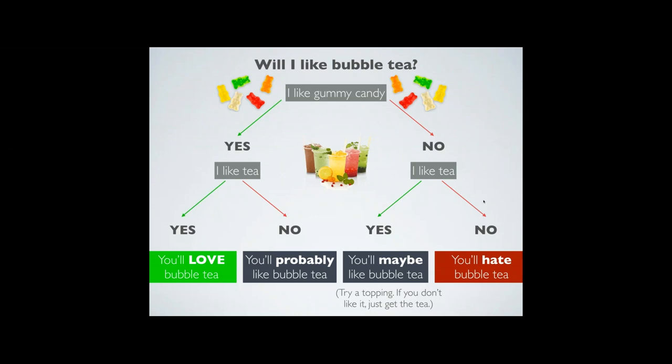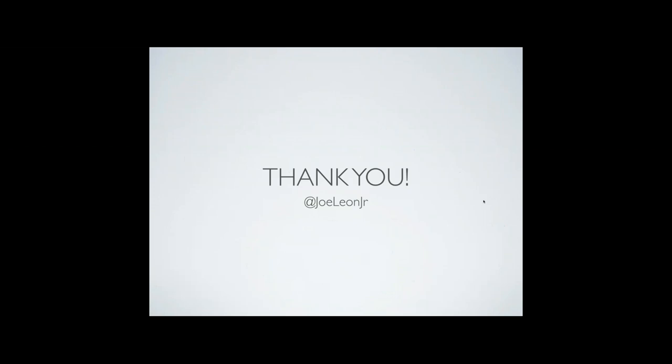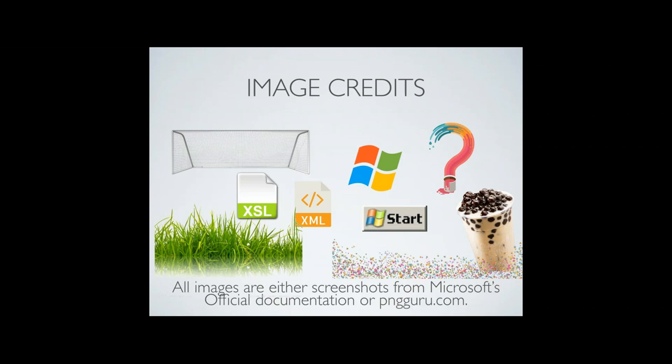Just to recap: we're taking tea, maybe adding milk, maybe adding fruit flavor, adding some topping like cooked tapioca, taking a thick straw — and that's bubble tea, plain and simple. All images used unless taken from Microsoft are from PNG Guru. Thank you all very much for your time. I'm at JoeLeonJr on Twitter and GitHub. Hopefully you guys enjoyed the presentation.